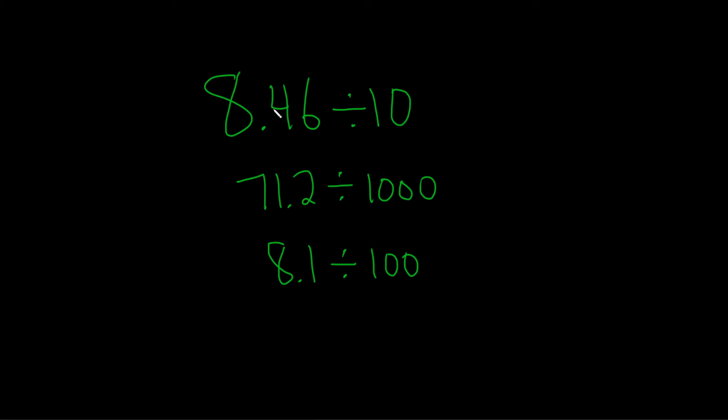So for example, in this first example here, we have one zero. So we just take this decimal and we go left one time. The answer is .846. Again, it's just one zero, so you go left one time.